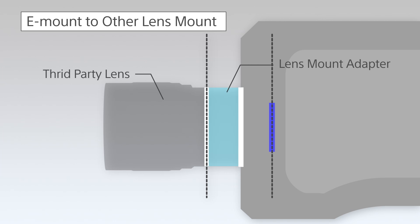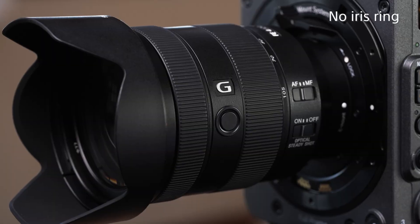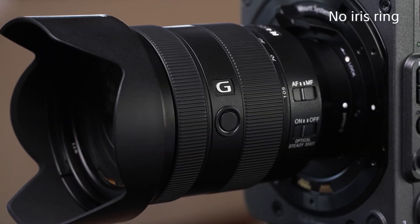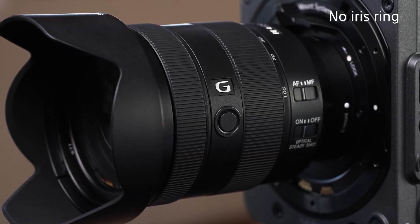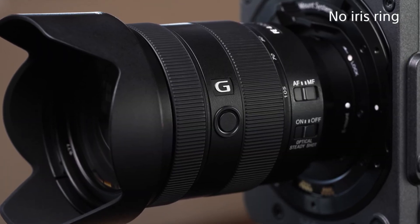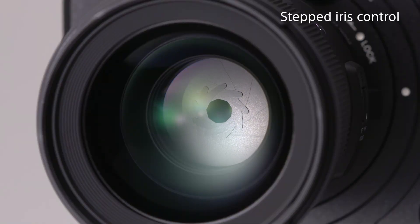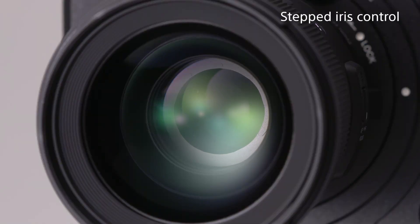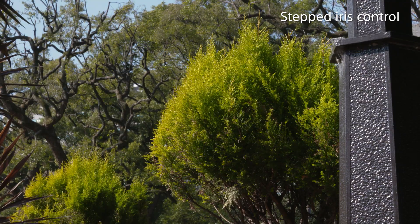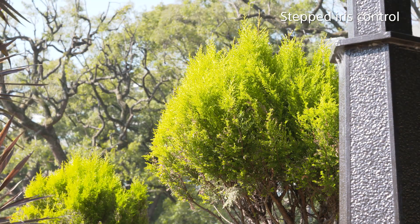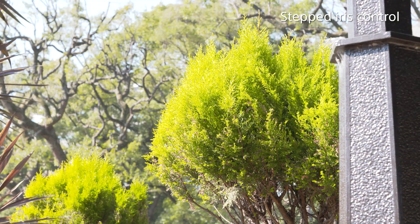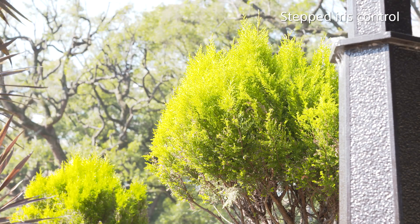However, there are some lenses which do not have a dedicated lens ring to control the iris, or have an iris ring that does not rotate seamlessly but is stepped. These features are quite common in still image lenses and are not normally suitable for the seamless iris control required for general movie shooting.